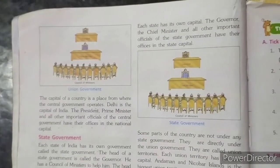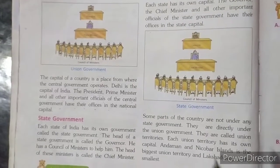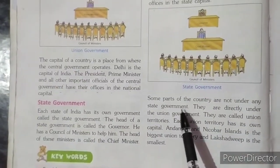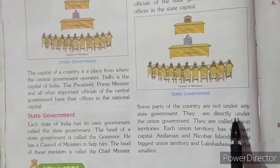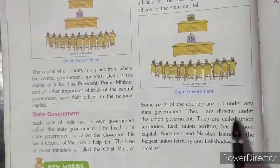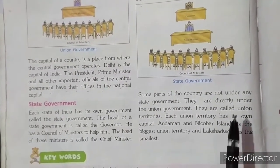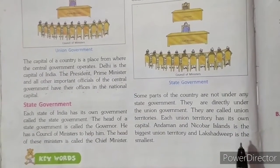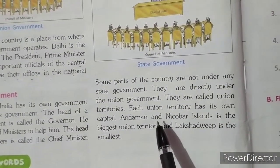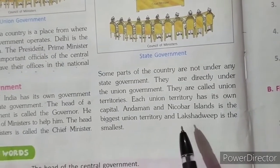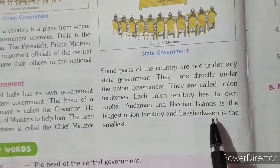Union Territories are not under any State Government — they are directly under the Union Government. Each Union Territory has its own capital. The Andaman and Nicobar Islands is the biggest Union Territory.